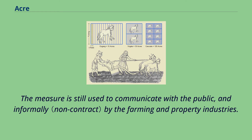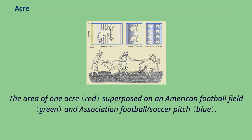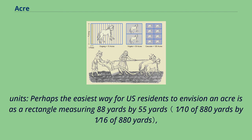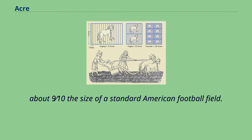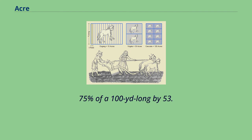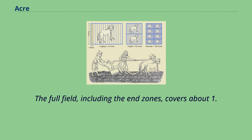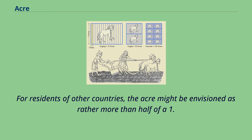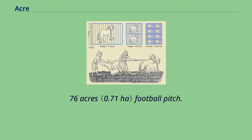The area of one acre superposed on an American football field and association football pitch is a useful comparison. One international acre is equal to the following metric units. Perhaps the easiest way for U.S. residents to envision an acre is as a rectangle measuring 88 yards by 55 yards — about nine-tenths the size of a standard American football field. To be more exact, one acre is 90.75% of a 100-yards-long by 53.33-yards-wide American football field. The full field, including the end zones, covers about 1.32 acres. For residents of other countries, the acre might be envisioned as rather more than half of a 1.76-acre football pitch. It may also be remembered as 1% short of 44,000 square feet.